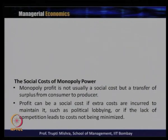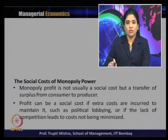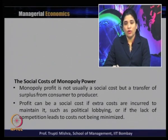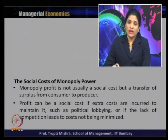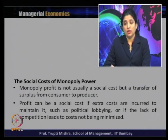Profit is not strictly the social cost because firms need some profit to survive in the market and produce goods for consumers. The social cost comes not directly from the monopolist's profit; monopolist profit is not usually a social cost but rather a transfer of surplus from consumer to producer. When prices rise, the loss in consumer surplus goes to the producer, making this transfer itself a social cost as it takes surplus away from consumers and transfers it to the producer.